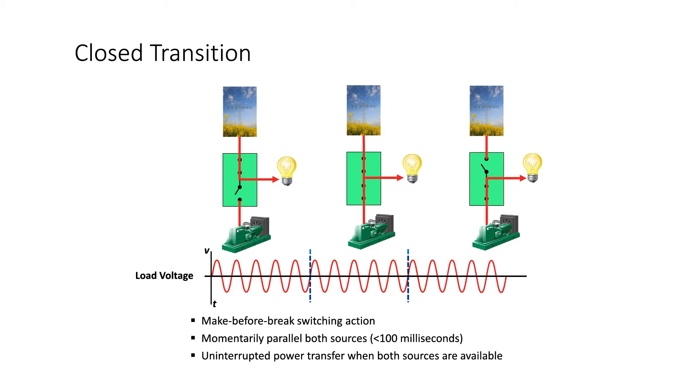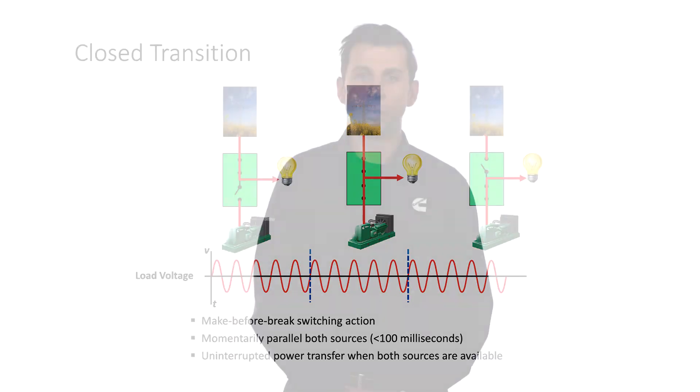Because closed transition involves momentarily paralleling with the utility, utilities often require additional protective functions when closed transition is applied. In order to achieve closed transition with the transfer switch, the hardware of the ATS must be capable of closed transition operation.